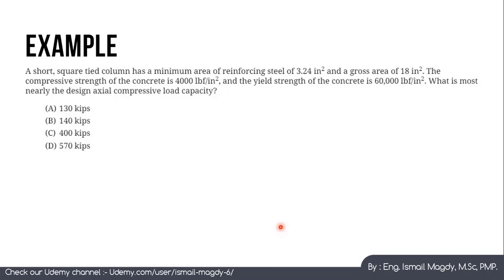So we want to calculate the design axial compressive load capacity, so we need to calculate the Phi Pn. We know that Phi equals 0.65 for compression members and we know that the equation for Phi Pn equals 0.85 multiplied by 0.85 Fc prime multiplied by area gross minus area steel plus area steel multiplied by F yield. We have all of these data now.